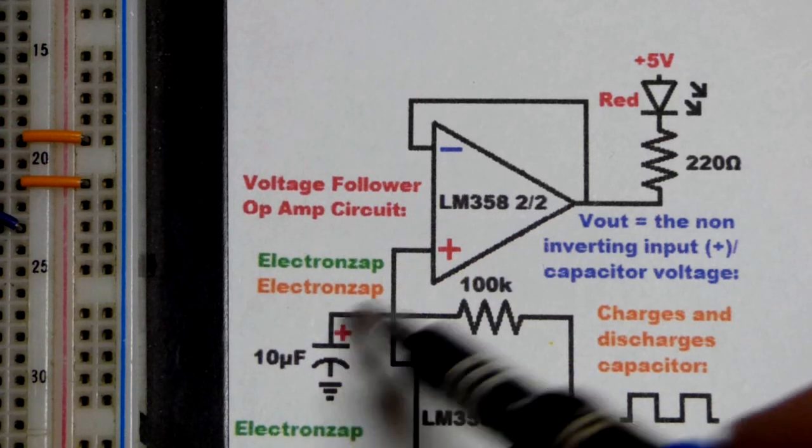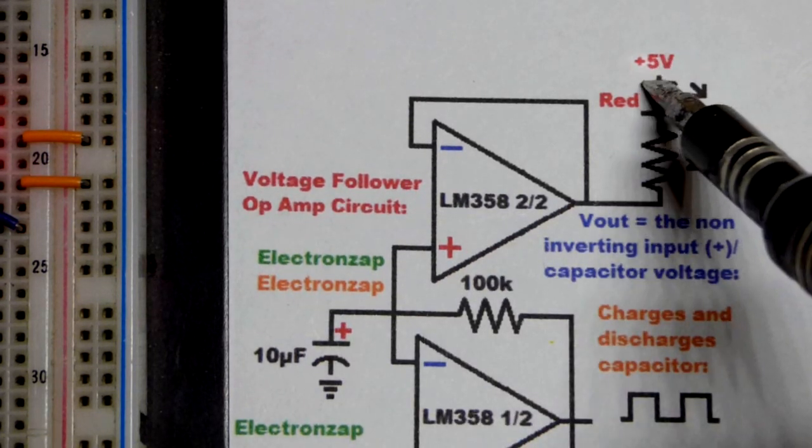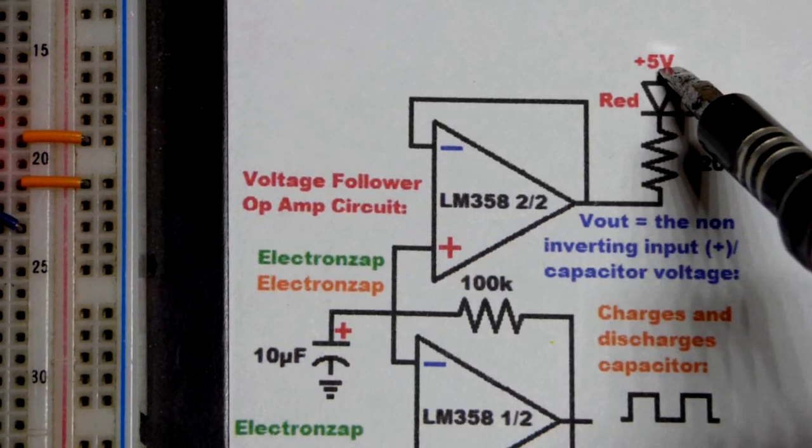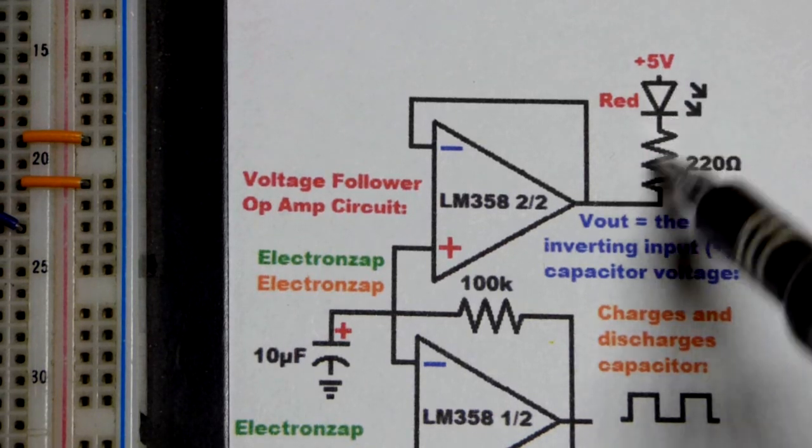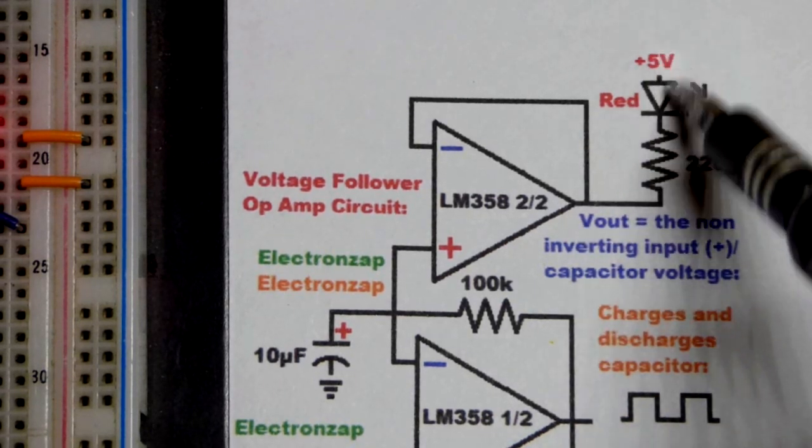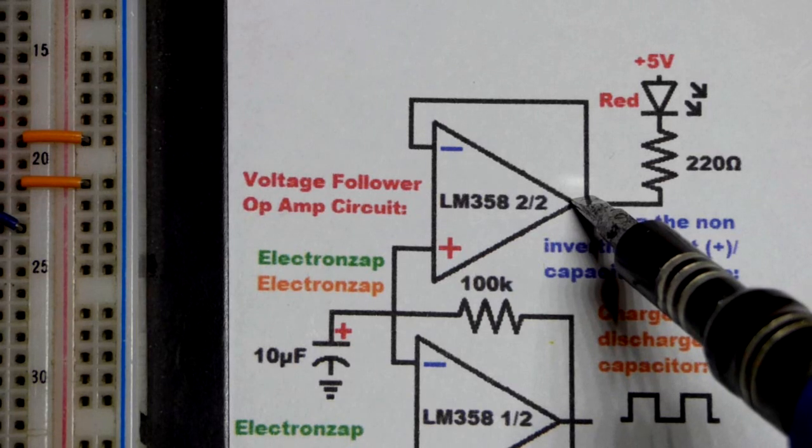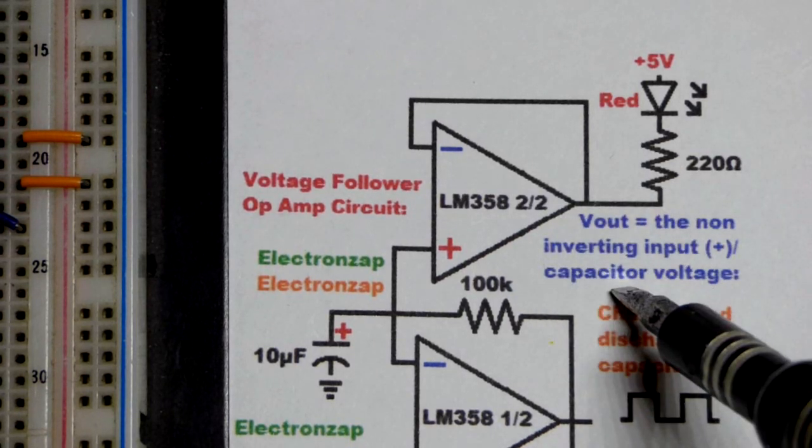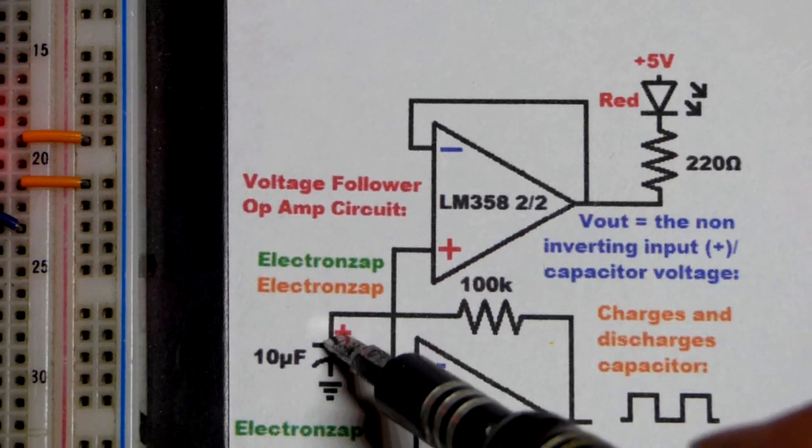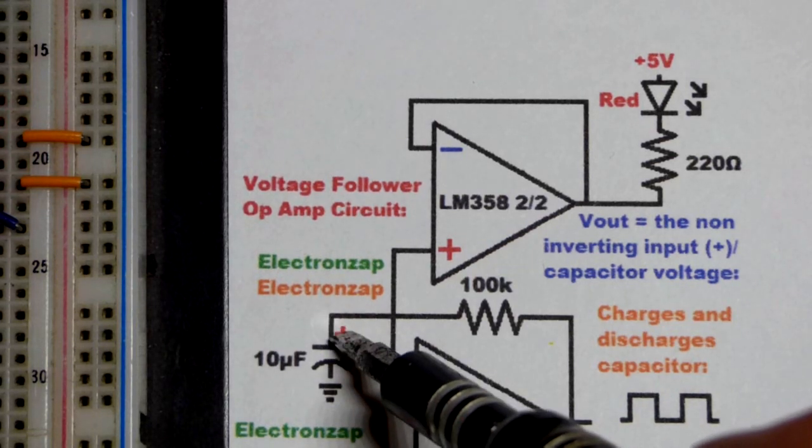So that's going to follow what the capacitor does. We have the anode of the red LED in this case to the positive 5 volts there. The cathode headed to the output there. So it's going to light up when the output is connected to ground for the most part. When the capacitor is completely discharged, about 0 volts.